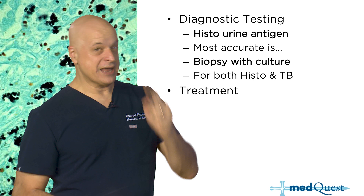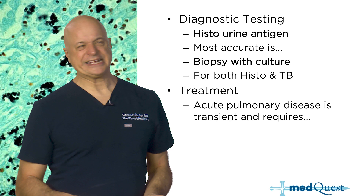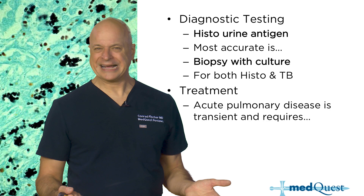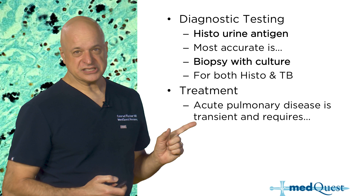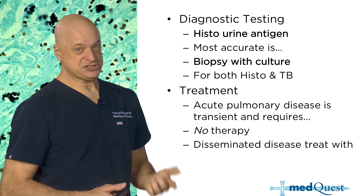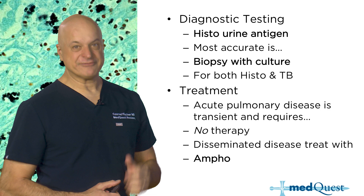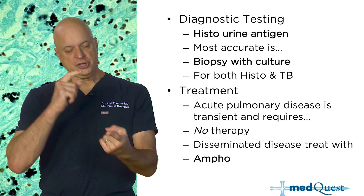Urine antigen for histoplasmosis is key. Most dimorphic fungi, if they cause only a limited respiratory illness, don't need any treatment — they resolve on their own like a viral syndrome. The pulmonary disease usually doesn't need therapy. But if they disseminate to the brain — coccidioidomycosis meningitis, cryptococcal meningitis, histoplasmosis in the marrow — then it's amphotericin. Amphotericin doesn't have many uses anymore: cryptococcus, mucormycosis, and disseminated dimorphic fungi.